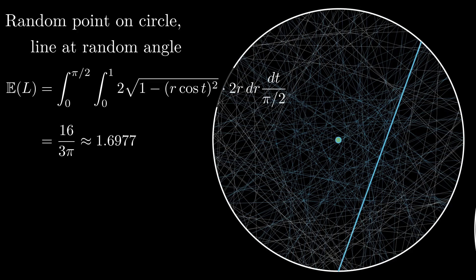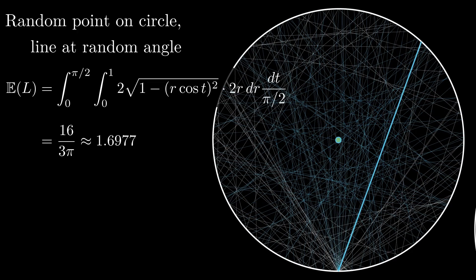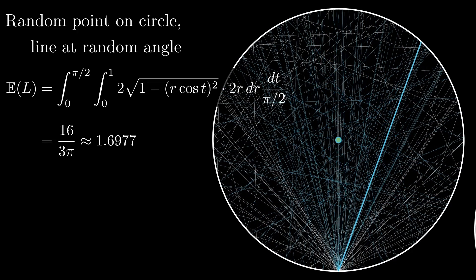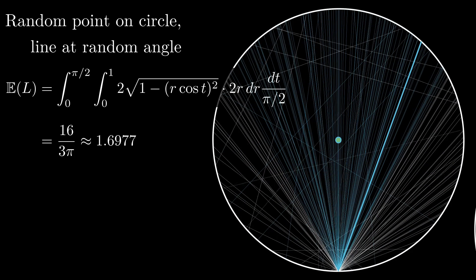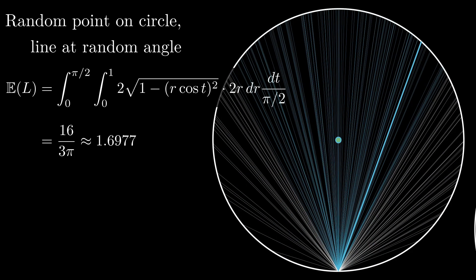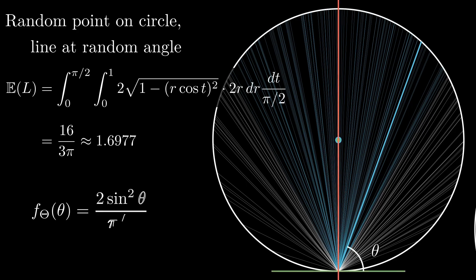Because we have a double integral here, it may not be immediately clear whether we can reduce to a 1D integral and find the density function of θ like we did in the previous cases. With some substitutions, we can indeed show that the density function of θ in this case is 2 sin(2θ) / (π/2).